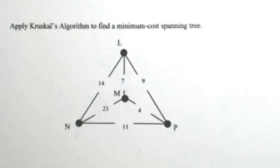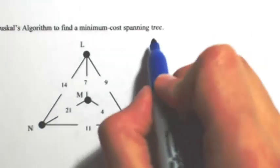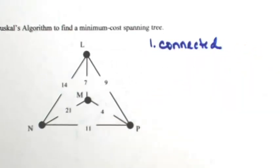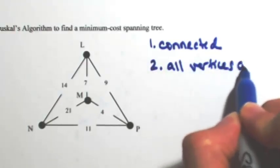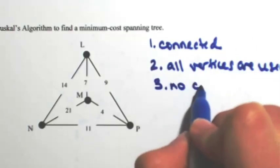Apply Kruskal's algorithm to find a minimum cost spanning tree. Because we have a spanning tree, we're going to be looking for three things. First, the graph is going to be connected, so you will be able to get from one vertex to another. The second thing is that all the vertices are going to be used. And then the third thing is that there are no circuits.